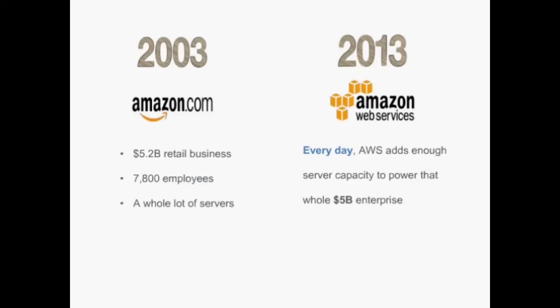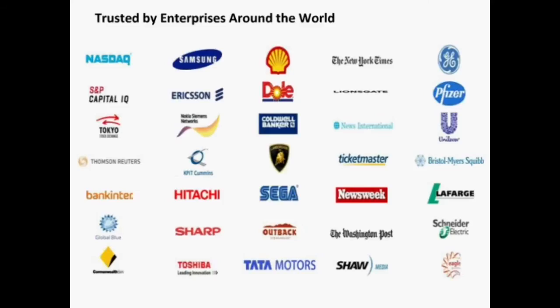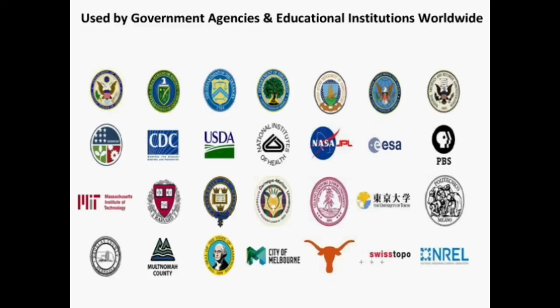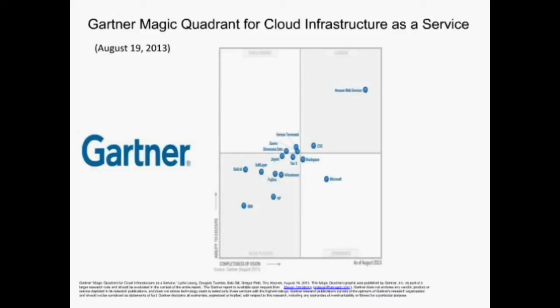Every day this year, we are adding enough server capacity to power all of Amazon.com's business when it was a $5 billion retailer back in 2003, just to give you a sense of the scale we are operating at now. AWS is used by enterprises around the world in a variety of sectors, as well as government agencies, educational and nonprofit institutions. We are consistently recognized as a leader in the cloud and IT services space, and EMR is also consistently recognized as a leader in the Hadoop space by Gartner, Forrester, and other analysts.